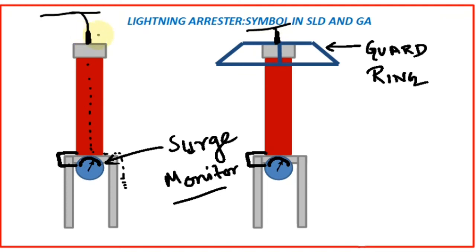These terminals are suitable for ACSR conductor termination. All the lightning arrestors I have seen in my career are suitable for ACSR conductor termination. If any of you have seen a lightning arrestor suitable for connection with aluminum tube, please let me know in the comment section — that will be an upgrade for me as well. As far as I know, all lightning arrestor terminals can be connected with ACSR conductor only.